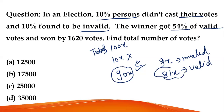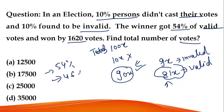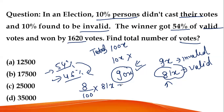The winner got 54% of the valid votes and won by 1,620 votes. Find the total number of votes. If the winner got 54%, the loser gets 46%, since combined they make 100%. The difference is 8% of valid votes, and 8% of valid votes equals 1,620.